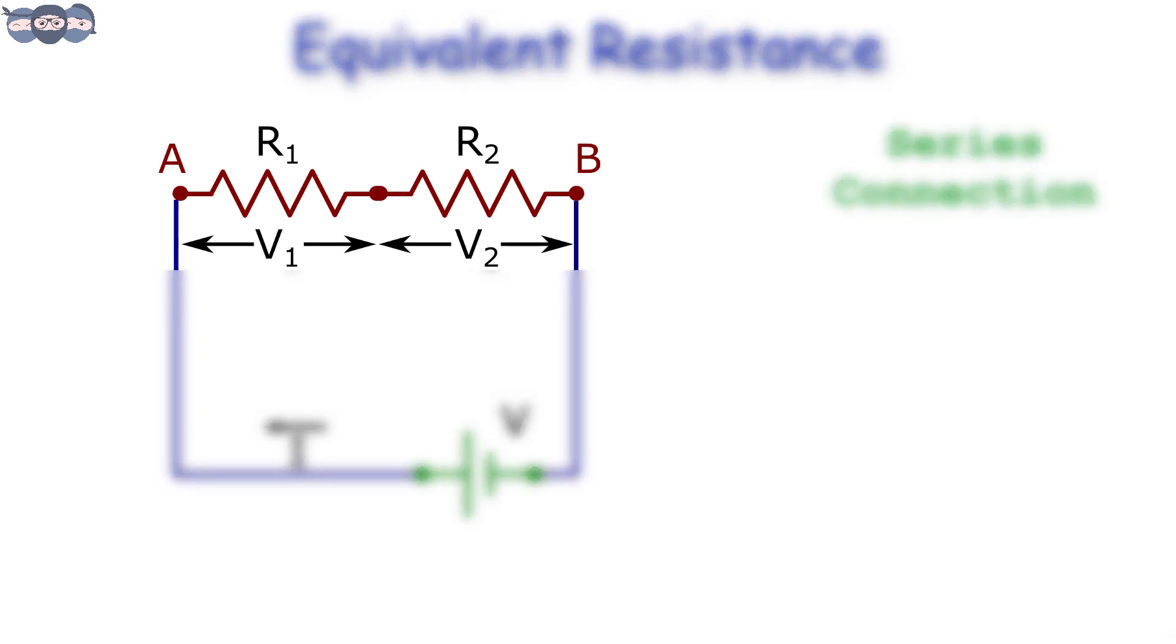As seen here, the second resistor is connected to the first resistor at its end terminal. In series connection, the current flowing through the first resistance passes through the second resistance as there is no other path.